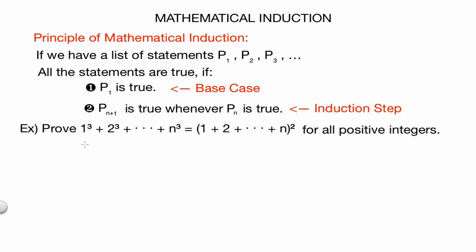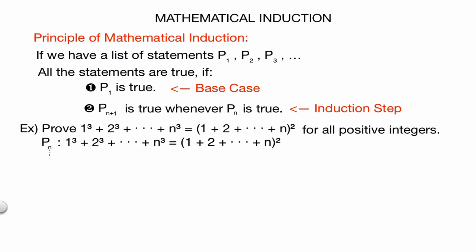Let's look at an example. In this example, we want to prove that the sum of all the integers cubed up to n cubed is equal to the sum of all the integers up to n, all of that being squared, for all positive integers. Our p_n is just this statement here, and we get our list of statements by replacing the different integers with n. First we have to start with the base case, which is that 1 cubed equals 1 squared, which is clearly true.